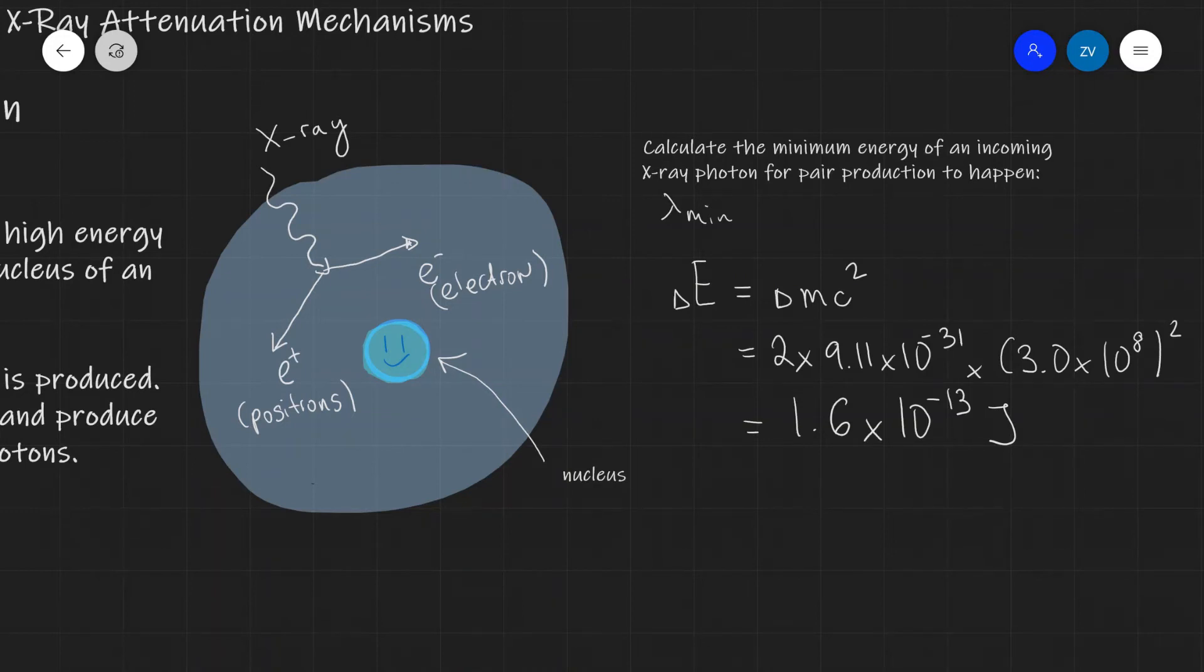Quite often in medical physics, we tend to work in electron volts. So if this over here is my energy, we can convert that to electron volts or mega electron volts. So what I'm going to do is take that number 1.6 times 10 to the power of minus 13, and then I'm going to divide that by the electron charge. So it's 1.6 times 10 to the power of minus 19. This means that I'm going to get approximately 1.2 times 10 to the power of 6 electron volts, which is approximately equal to 1 mega electron volt.